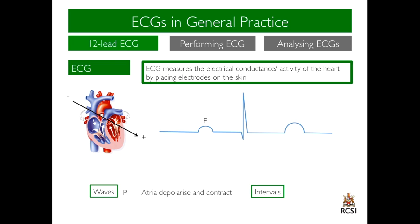The first wave is called the P-wave and represents the depolarisation of the atria and their contraction. The second complex waveform is called the QRS complex, which represents the depolarisation of the ventricles and their contraction. The third waveform is called the T-wave and represents the repolarisation of the ventricles.